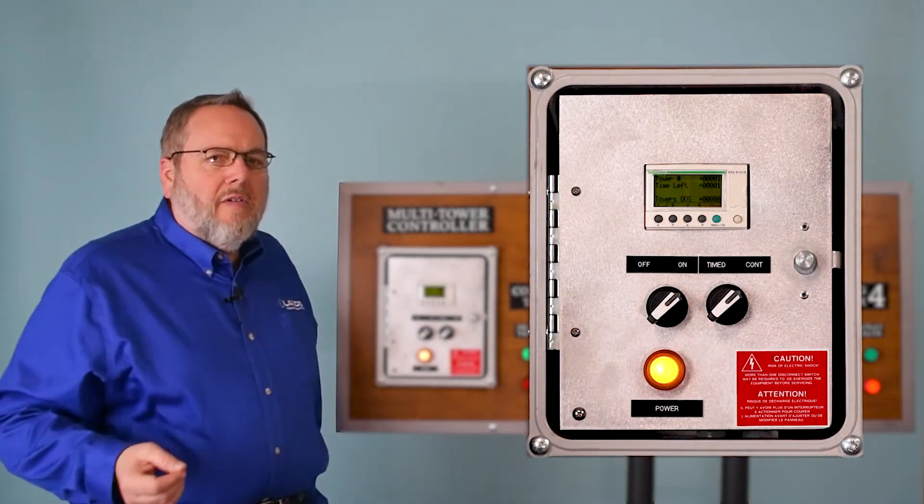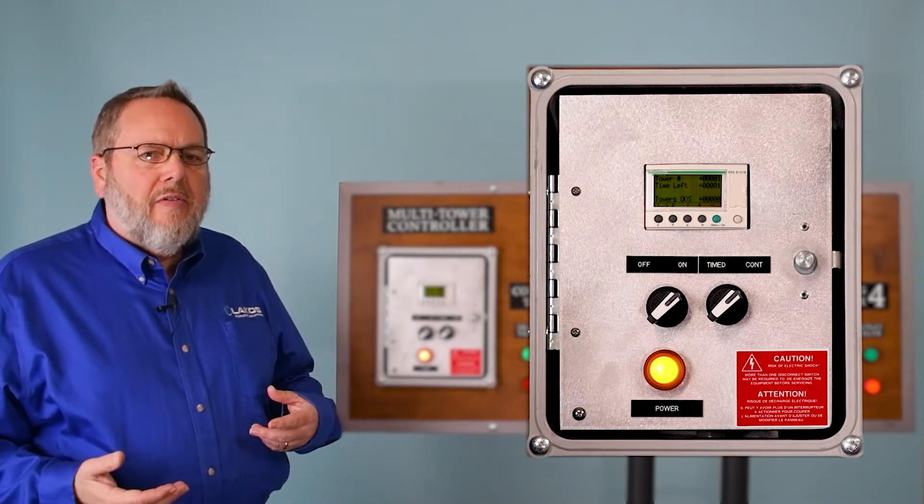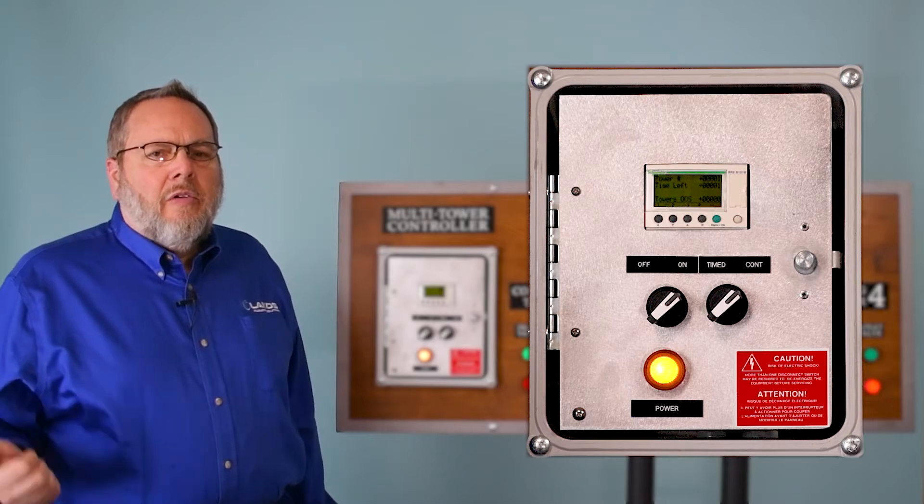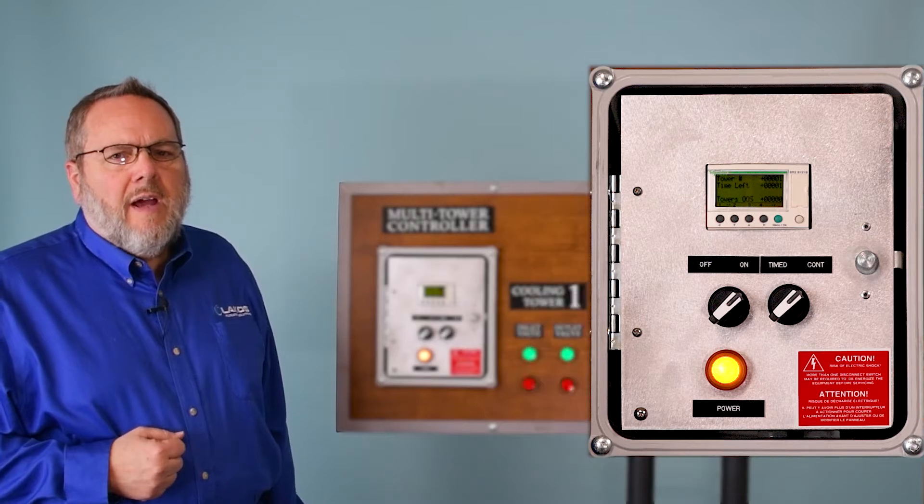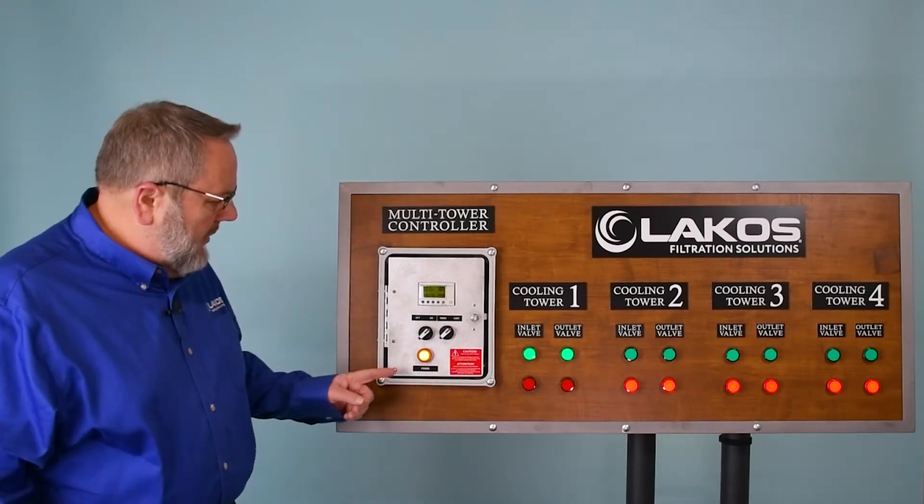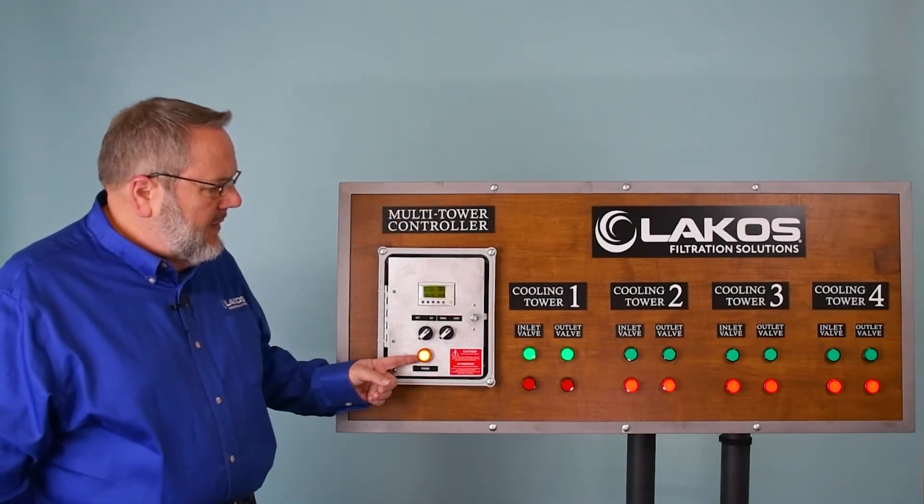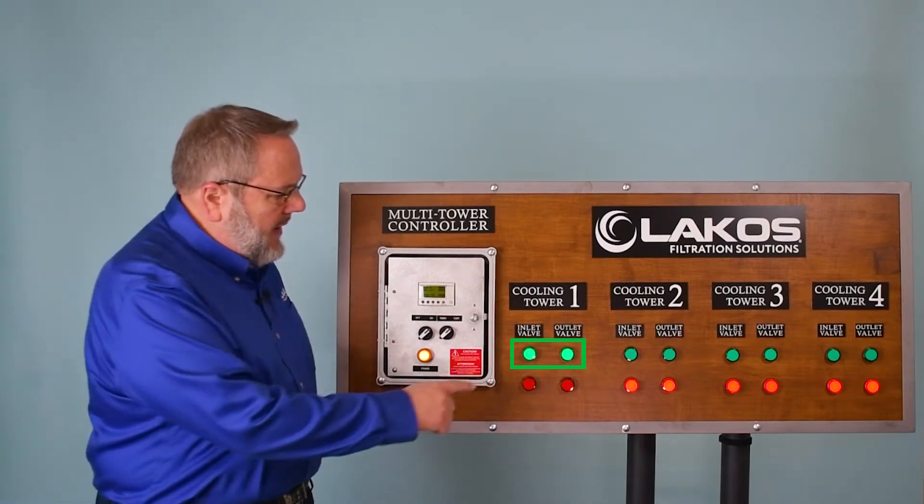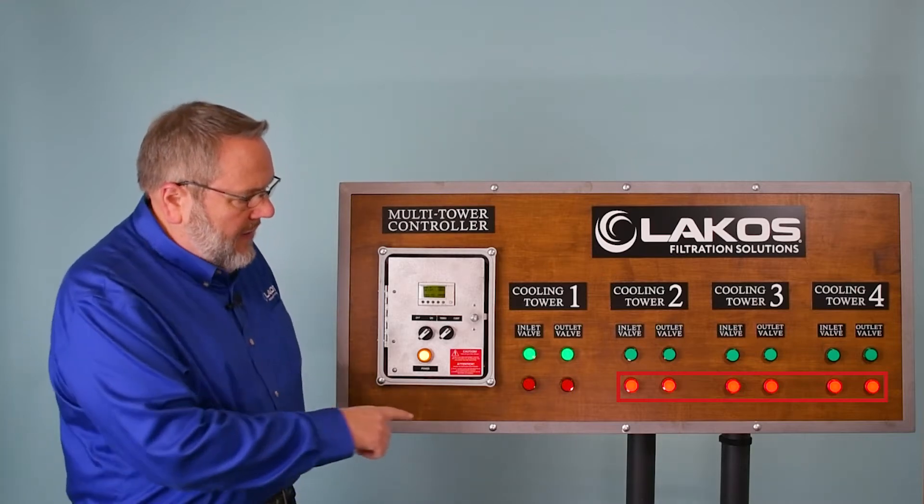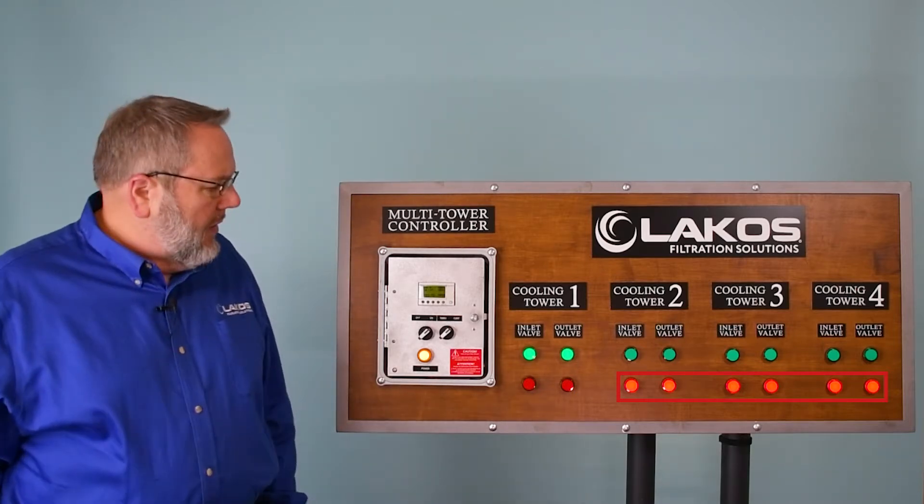If you want to run timed or continuous you will set times based on that. And then also if you want to skip a tower once you get everything set up, we'll show you how to do that as well. Again you can see here the power light is on. You can see here right now we are on tower one. The inlet and the outlet valves are open. The other towers are red which means they're closed.